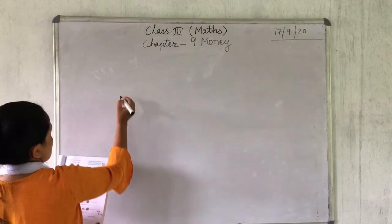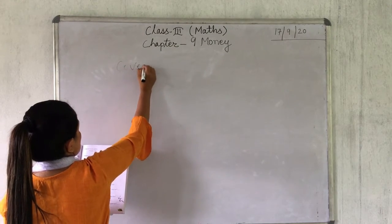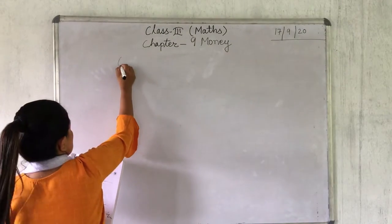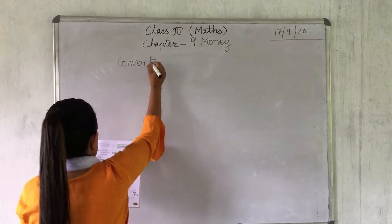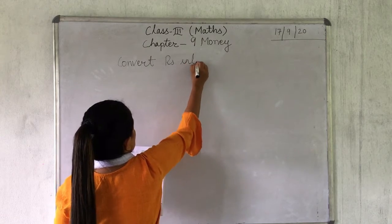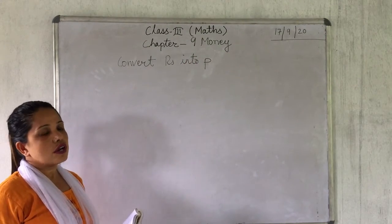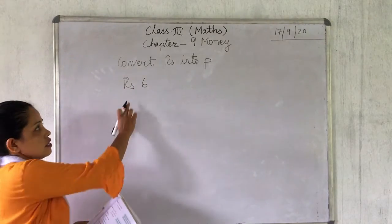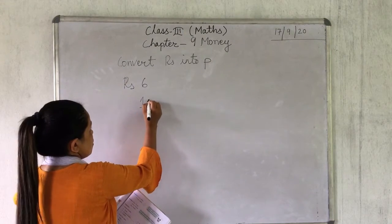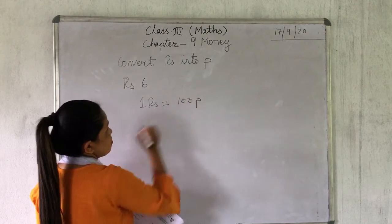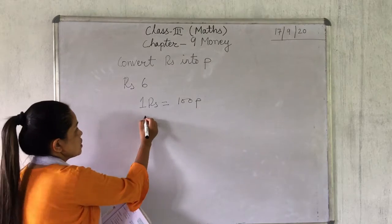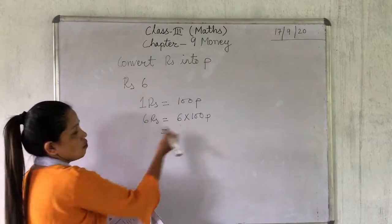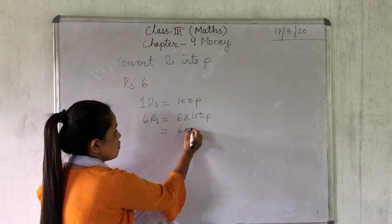Now I will show you how to convert rupees into paise. Suppose there is 6 rupees. As you know, 1 rupee is equal to 100 paise. Similarly, 6 rupees is equal to 6 into 100, which is 600 paise.